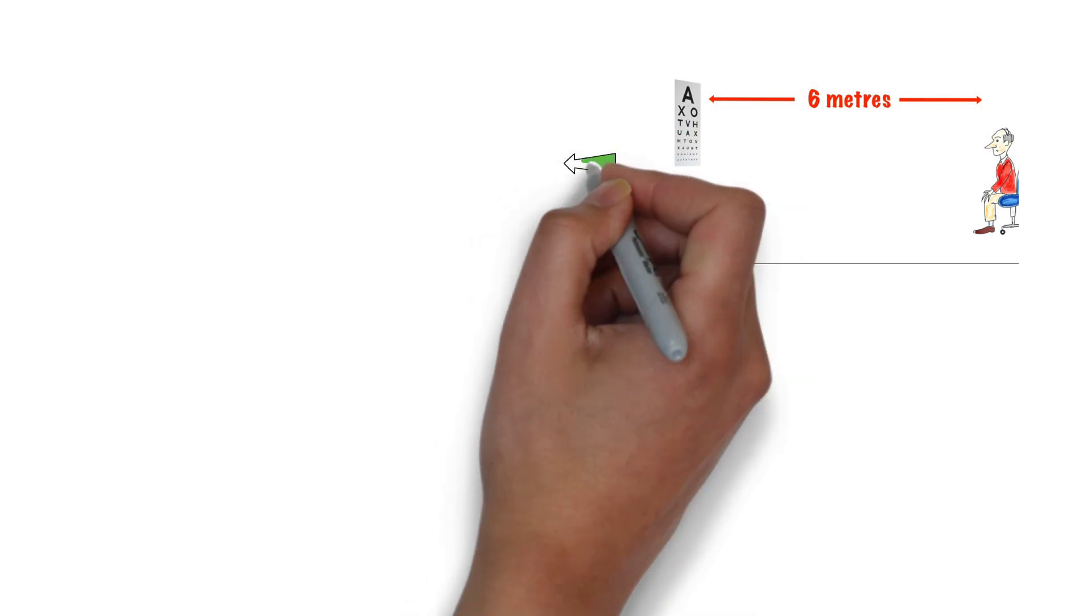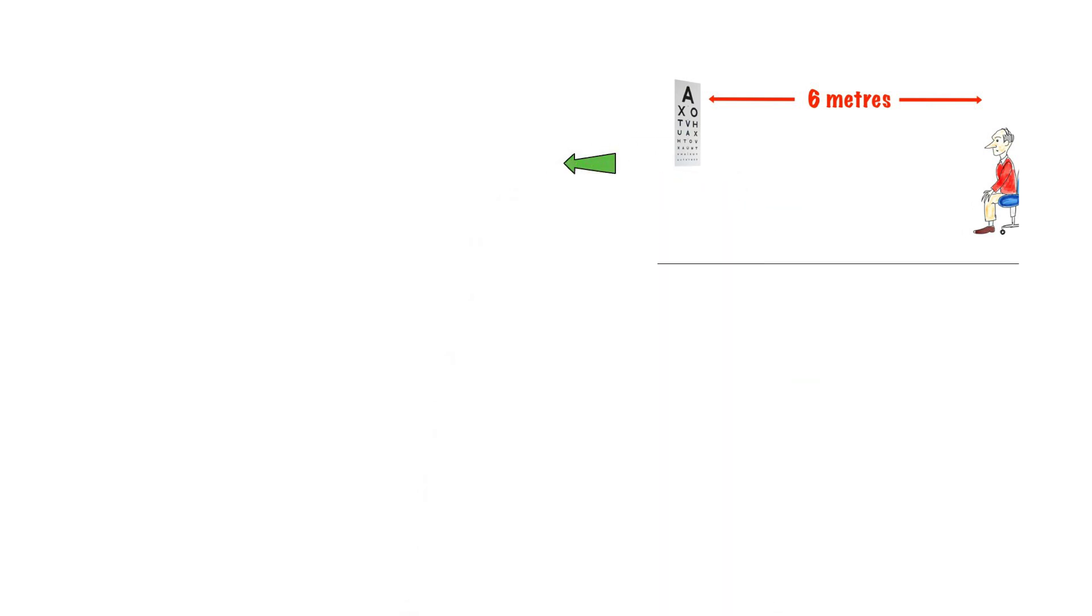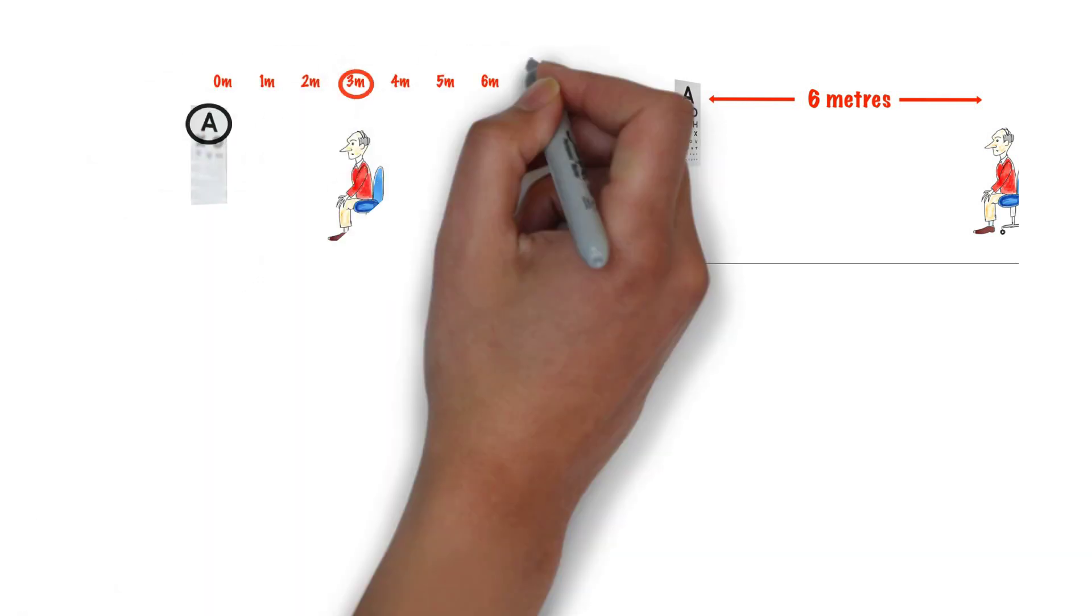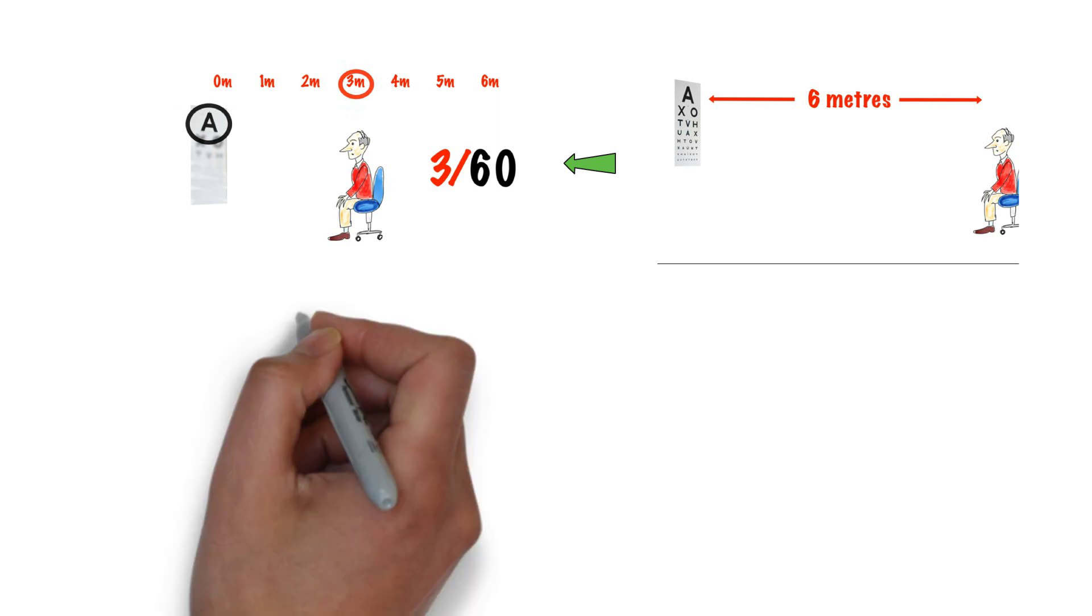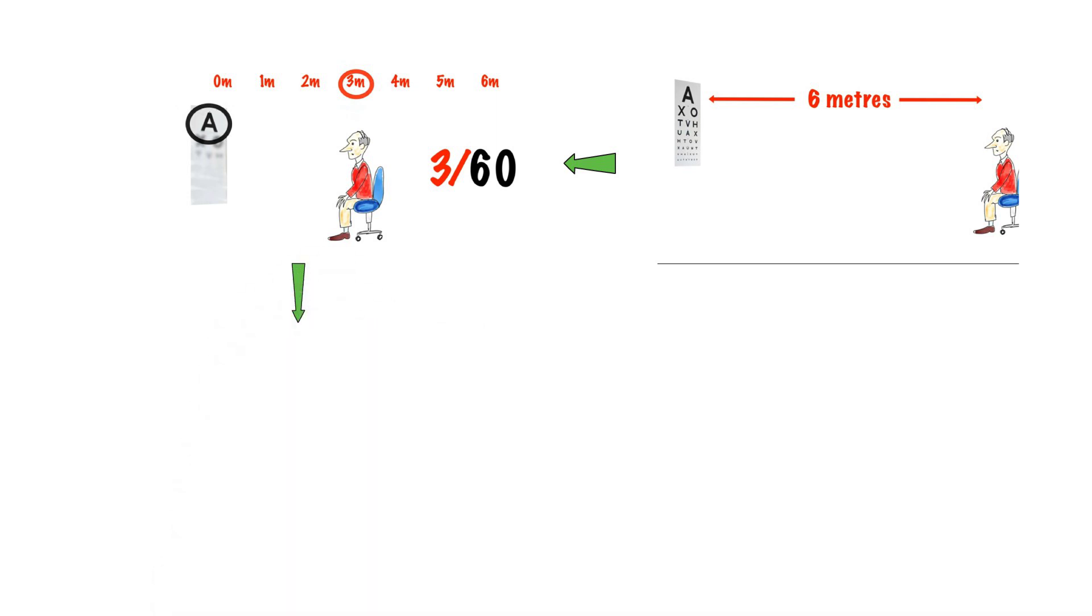Now, coming to the test. What happens if the patient is not able to read the first line from 6 meters? We move the patient towards the chart. Suppose, now he can read the first line from 3 meters. The vision is called 3 by 60. Or if he is able to see from 1 meter, the vision is 1 by 60.